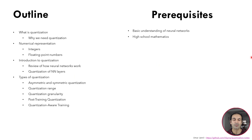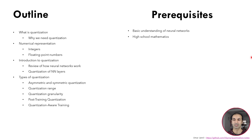I will start by showing what is quantization and why we need quantization, and later we will briefly introduce what are the numerical representations for integers and floating point numbers in our hardware, so in CPUs and GPUs. I will show you later what is quantization at the neural network level by giving you some examples, and later we will go into the detail of the types of quantization: the asymmetric and the symmetric quantization, what we mean by the range and the granularity, and later we will see also post-training quantization and quantization-aware training.